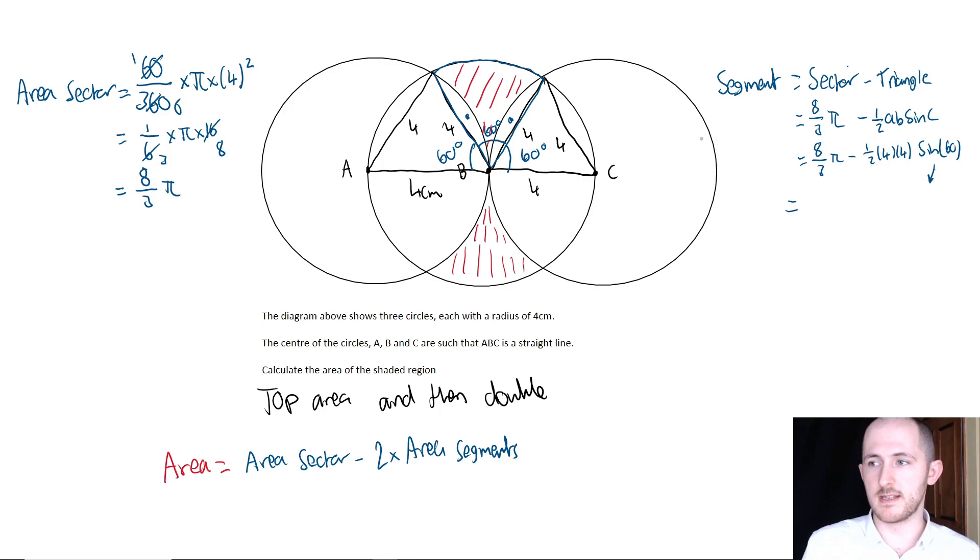Remember this is a non-calculator paper, but sine 60 you should know, and it is just root 3 over 2. If you want me to go through exactly how to remember all the different values you need for the trig identities, let me know in the comments.